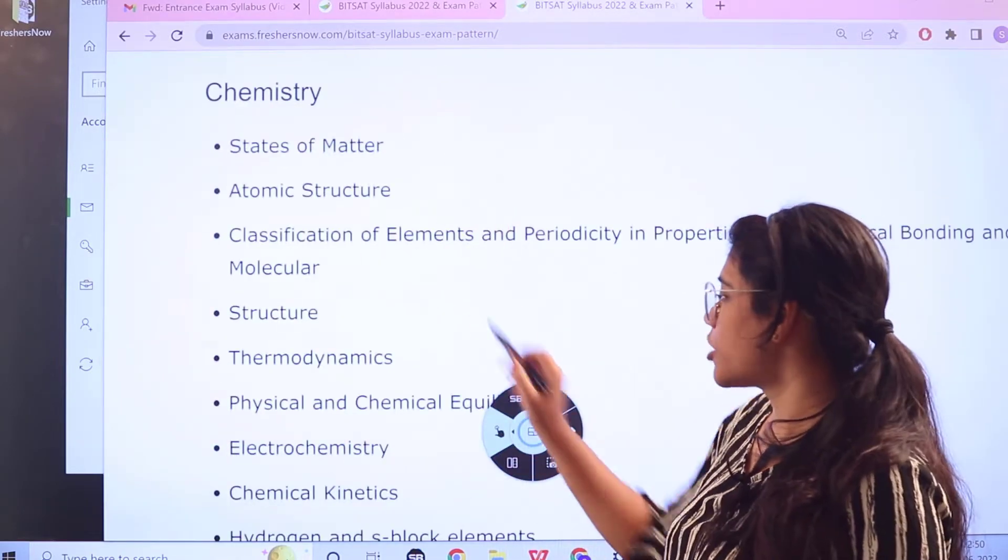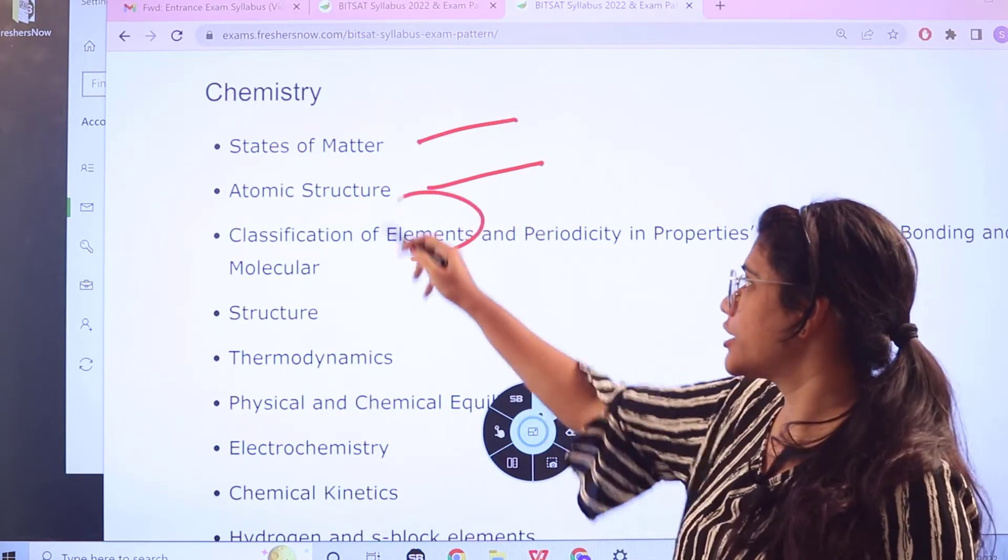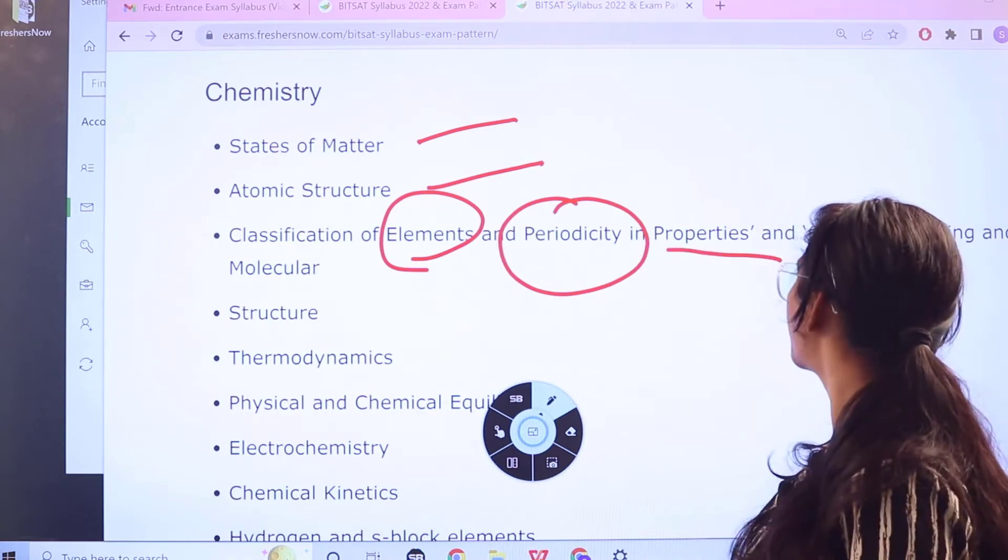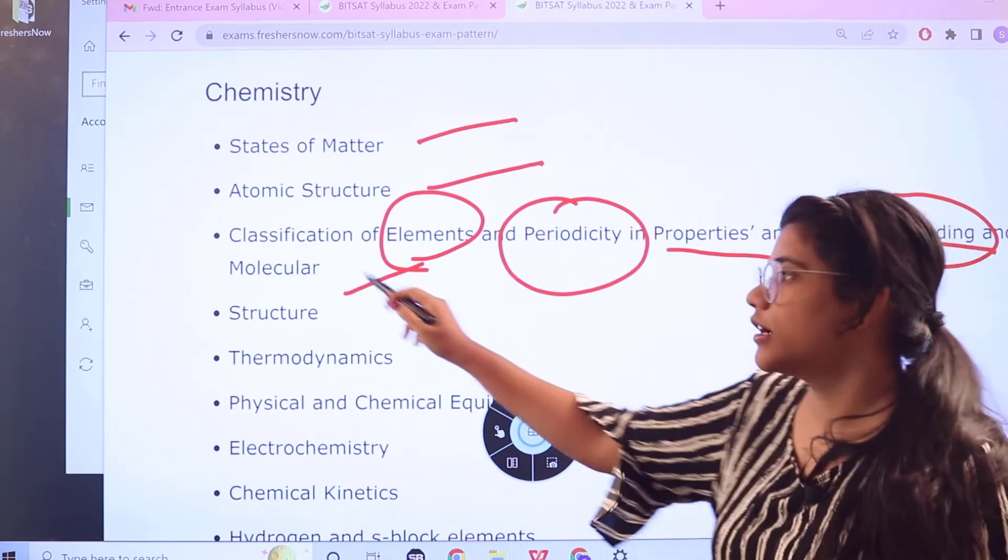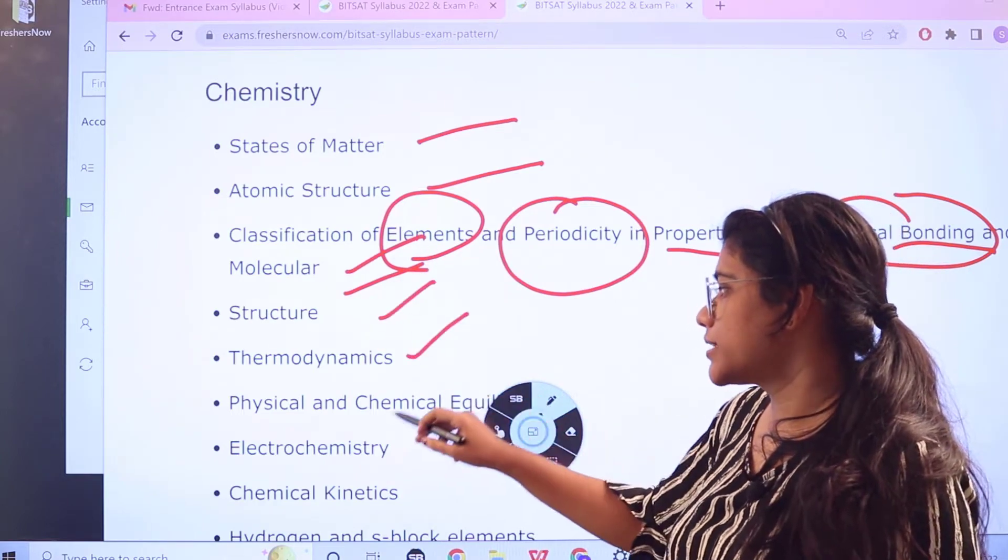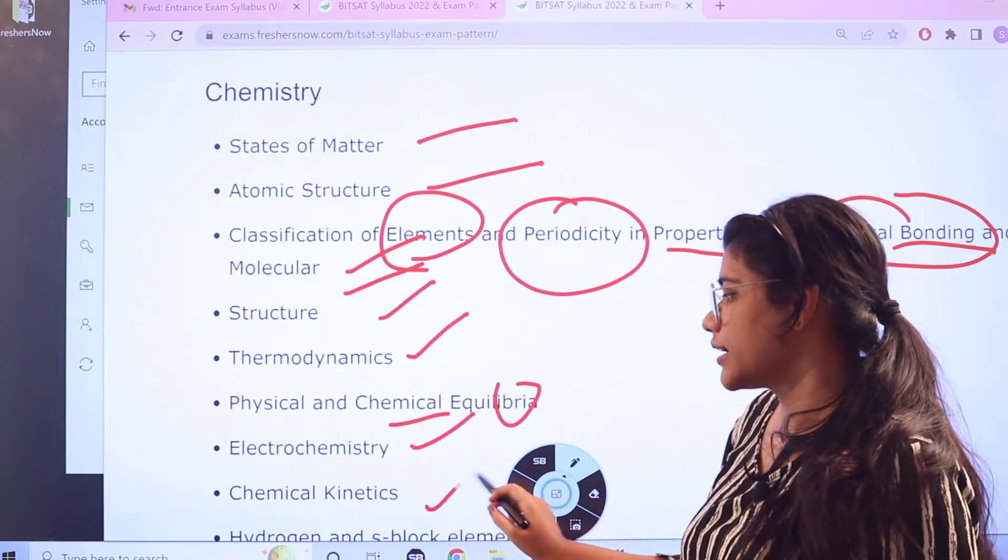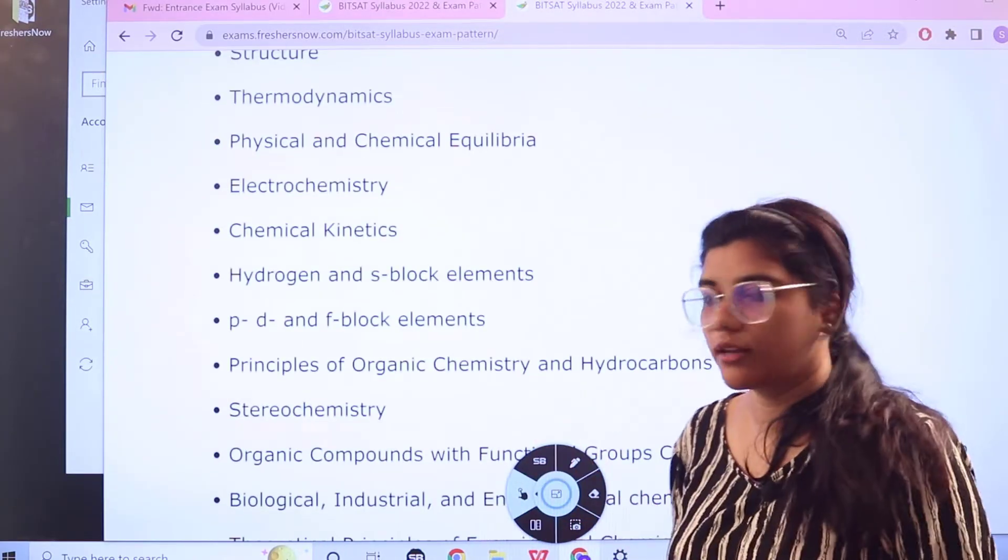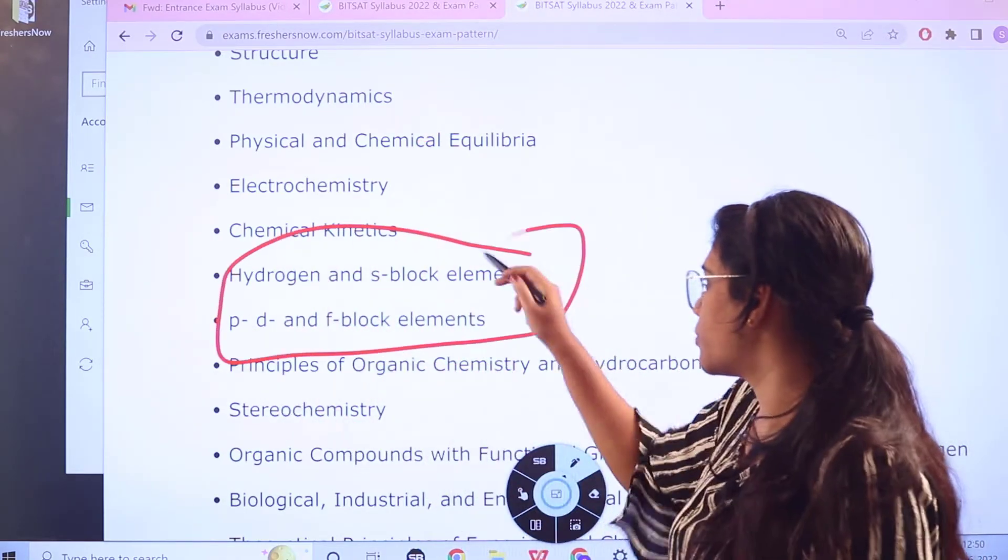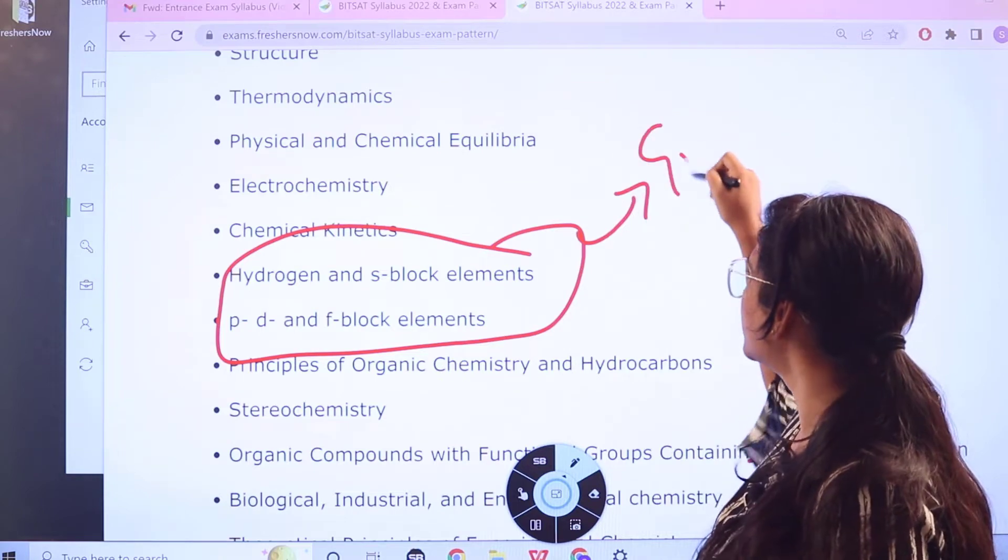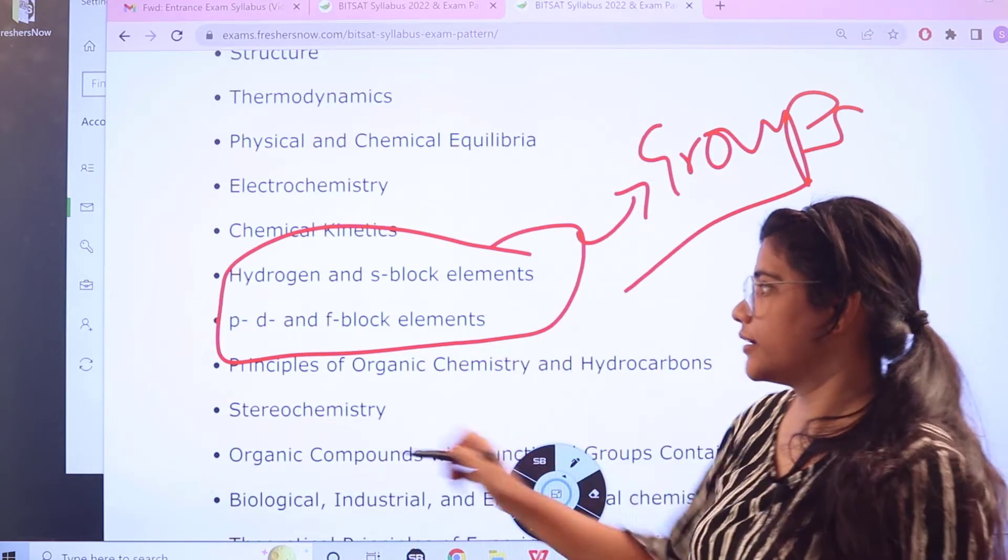Now for chemistry topics like states of matter, atomic structure, classification of elements, periodicity, then properties, chemical bondings and also knowing about the molecular bondings, structures, thermodynamics, physical and chemical equilibria, electrochemistry, chemical kinetics, hydrogen and s-block elements. So from here you have all of the block elements, the block elements in the sense this would be including all the groups and the families which are combined in this particular block elements.